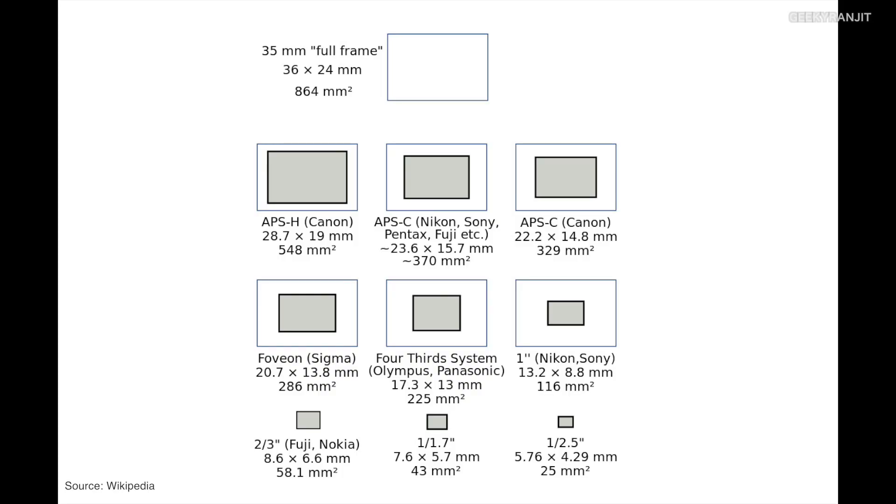After Micro Four Thirds, we have the one-inch sensor used in many bridge cameras and semi-professional cameras. These are even smaller than Micro Four Thirds, which is why many mega-zoom cameras use this one-inch sensor — you get a crop factor of around 2.7, making it easy to zoom in a lot. However, as the sensor size decreases, low-light sensitivity is not as great compared to higher-end cameras.